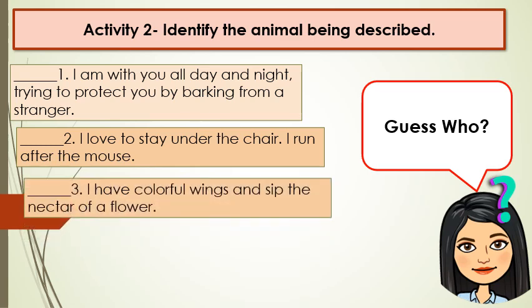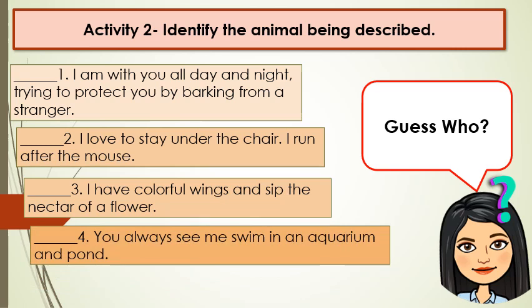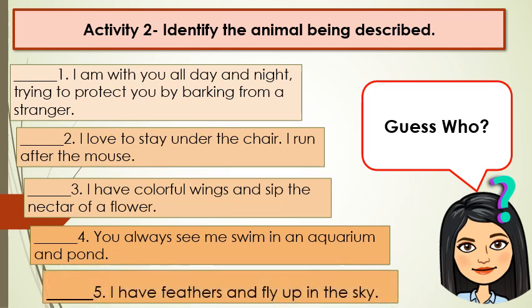Number 3: I have colorful wings and sip the nectar off a flower. Guess who? Number 4: You always see me swim in an aquarium and pond. Guess who? Number 5: I have feathers and fly up in the sky. Guess who?